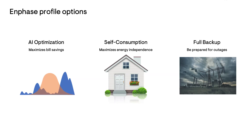Let's do a recap of the system profile options. The profile AI optimization will maximize bill savings, self-consumption will maximize energy independence, and full backup will prepare you for a power outage. Our recommendation is AI optimization as it will potentially save you hundreds of dollars per year compared to self-consumption.